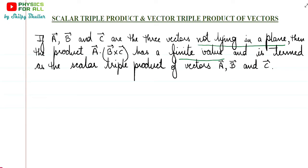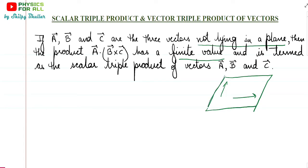It is not necessary that all three vectors need to be coplanar. When all the vectors lie in the same plane we call them coplanar. Whenever we have two random vectors pointing in any direction, it is always possible to find a plane parallel to those two random vectors. So any two vectors are always coplanar.